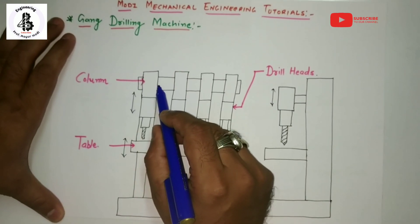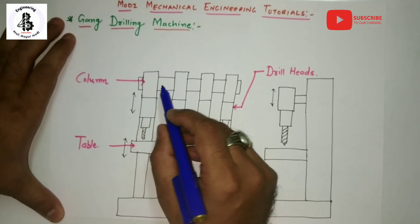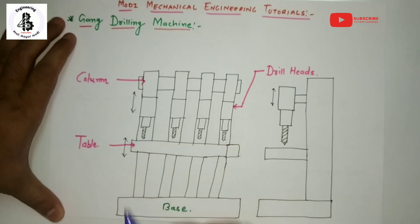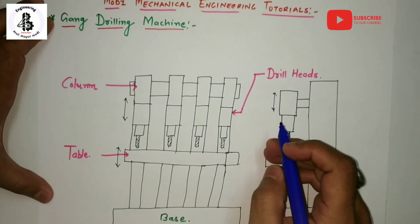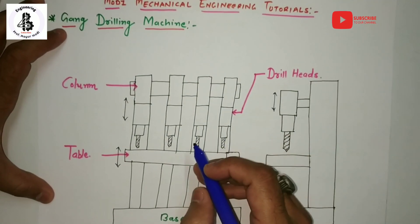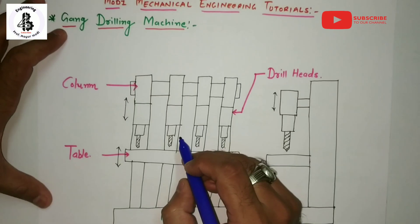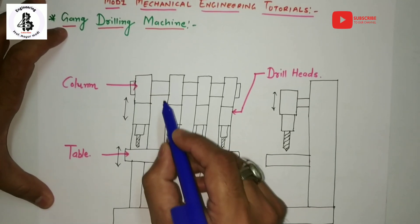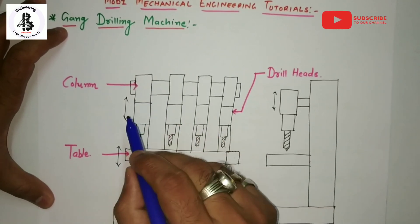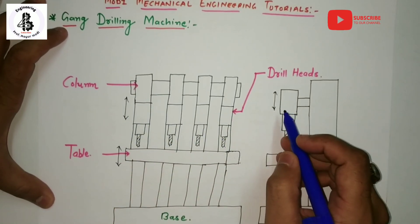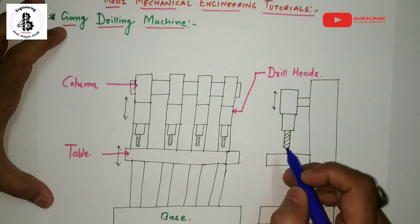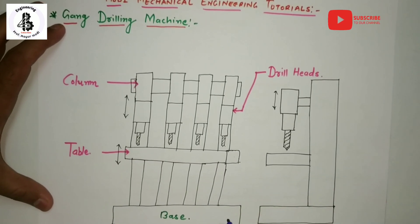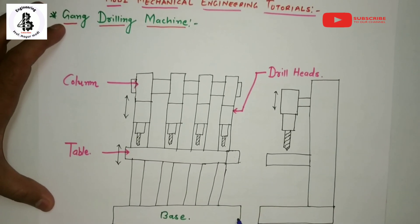Multiple spindles are rotated, and those multiple spindles form a gang of drill bits. By construction, this is why it is called a gang drilling machine. Let us start with the base of this particular gang drilling machine.